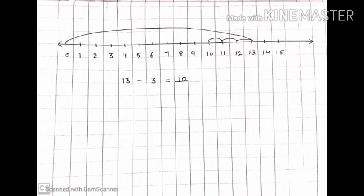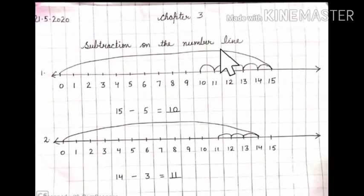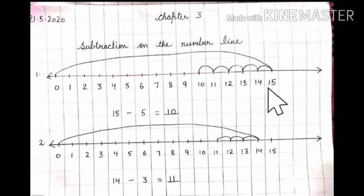Students, we have completed our three parts of subtraction in this video lecture. So just have a look at your notebook work. First of all, you will write the date, then chapter 3, and next line you will write subtraction on the number line. Then leave one line and write number 1. After that, you will draw a number line from 0 to 15 and write the numbers there. Then write the equation 15 minus 5. You will take a jump from 0 to 15, and after that take 5 steps back: 14, 13, 12, 11, 10. So the answer is 10.